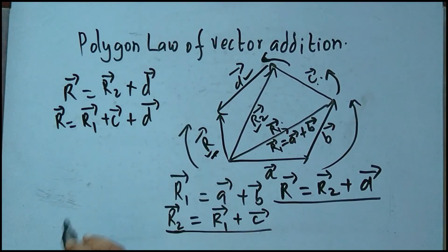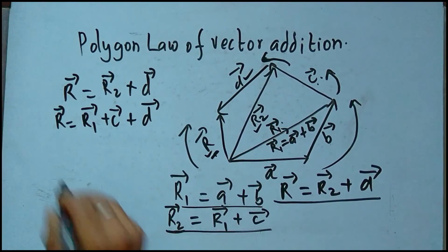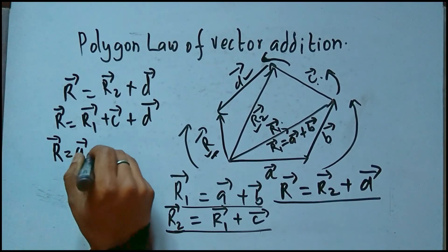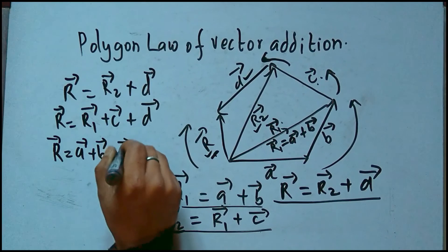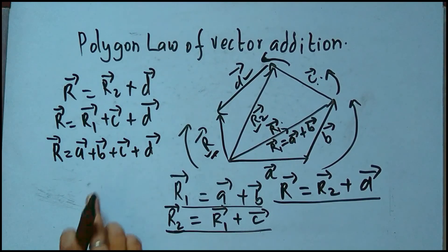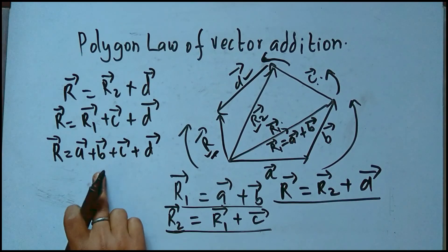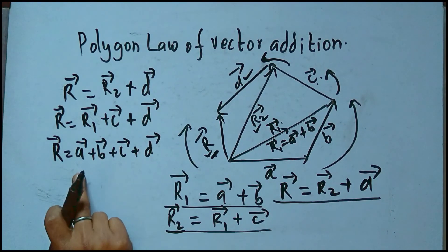Since R1 equals vector A plus vector B, the final resultant is equal to vector A plus vector B plus vector C plus vector D. In this way, we can find the resultant of multiple vectors acting simultaneously on the same body.